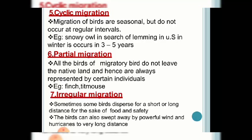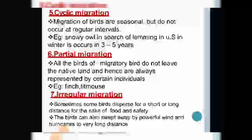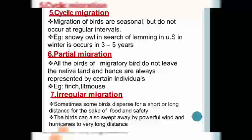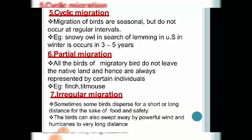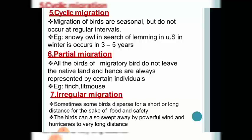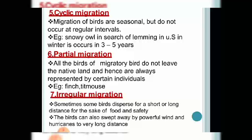The next type is cyclic migration. These birds migrate seasonally but not regularly. An example is the snowy owl in the US, which comes every three to five years in search of lemming, a food source. The migration is seasonal in nature — it occurs during cold periods — but it does not happen every year, occurring every three to five years. Therefore it is called cyclic migration.